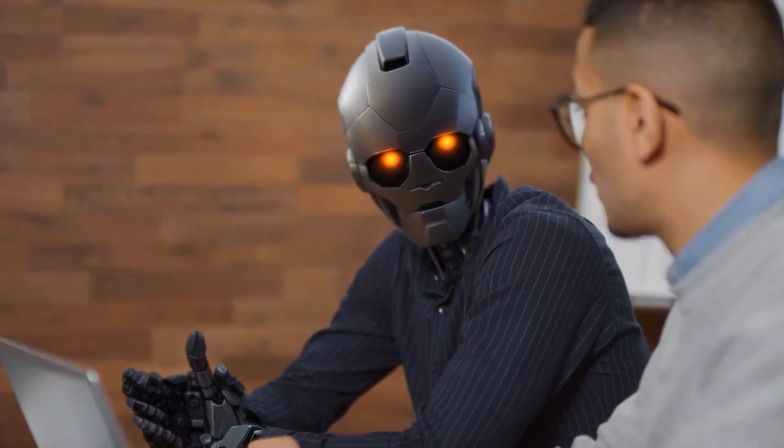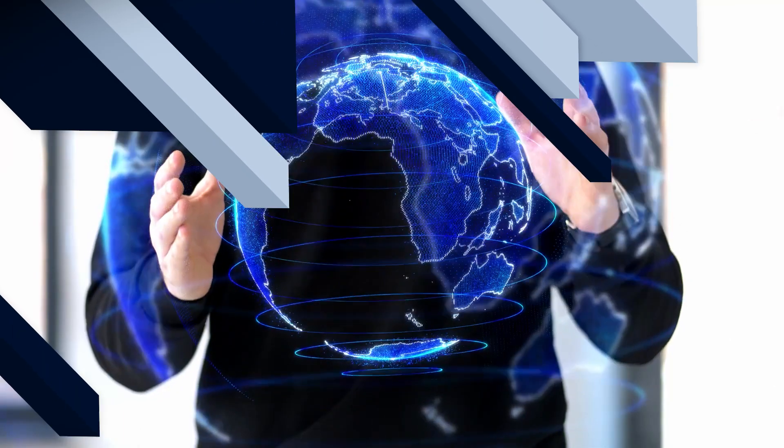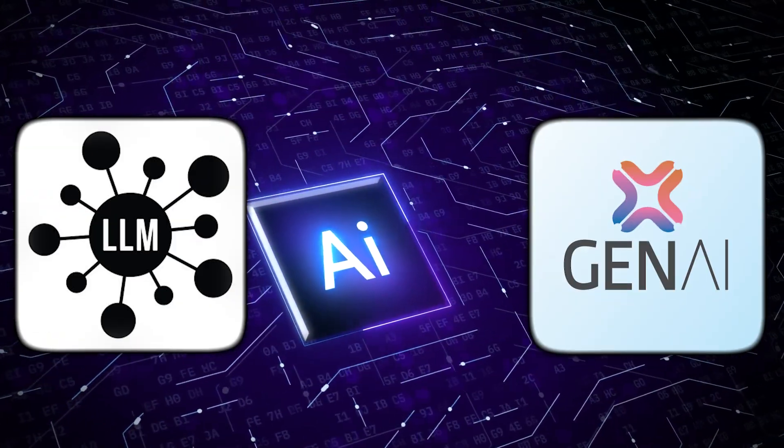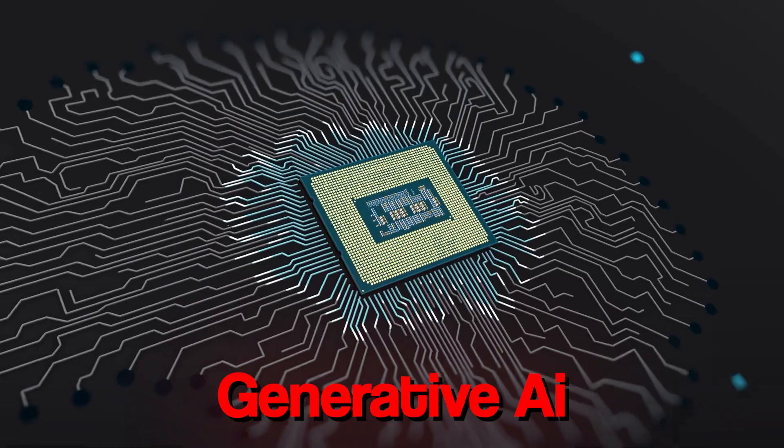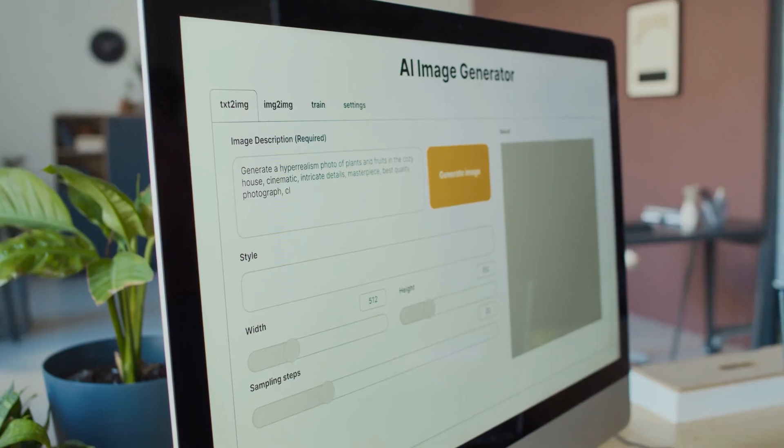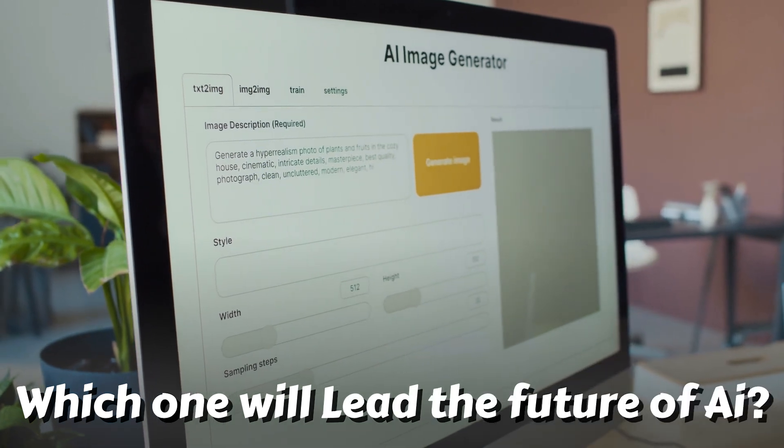Artificial intelligence, once a feared concept from movies, is now shaping our world. But within AI, two titans are battling for dominance. Generative AI and large language models. But what are they? How do they differ? And most importantly, which one will lead the future of AI?